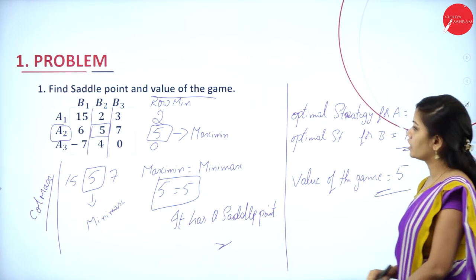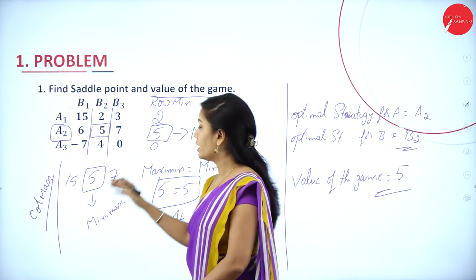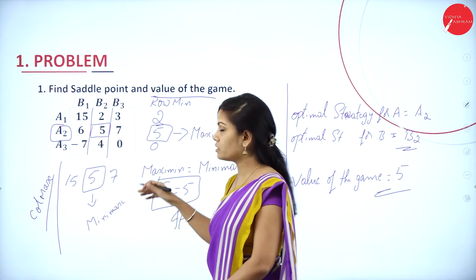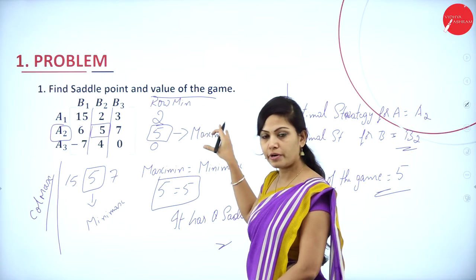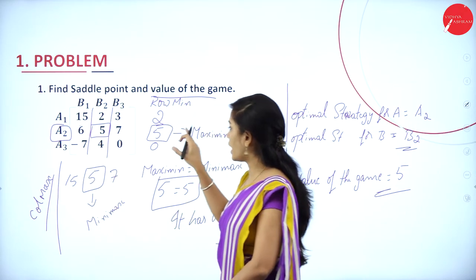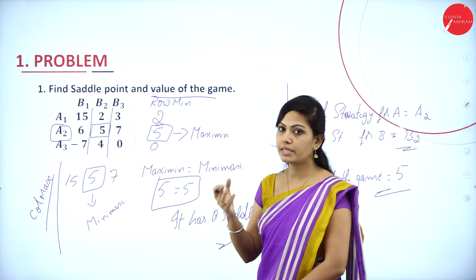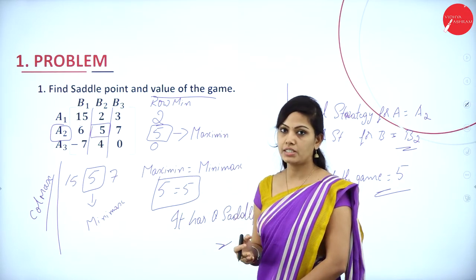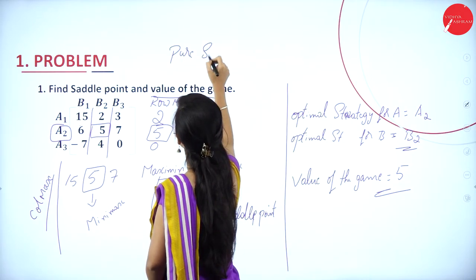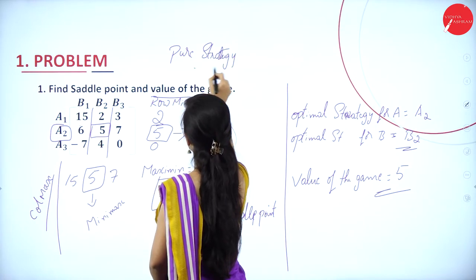To summarize: find the row minima and column maxima, then find the maximin and minimax. In row minima, find the maximum value (maximin); in column maxima, find the minimum value (minimax). If both are equal, it has a saddle point; otherwise it is a mixed strategy. This is a pure strategy problem.